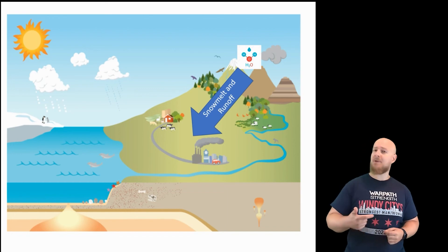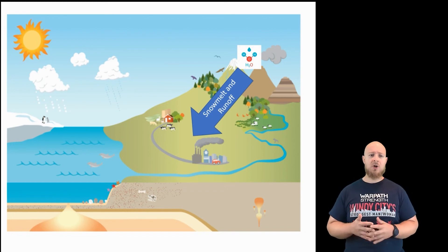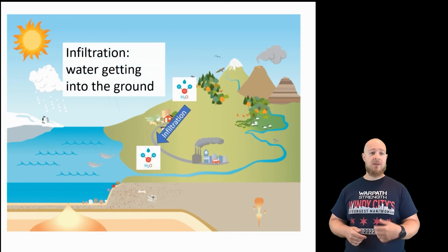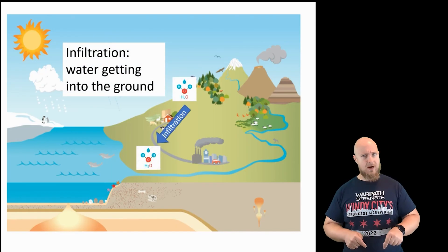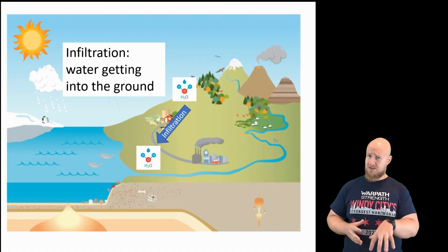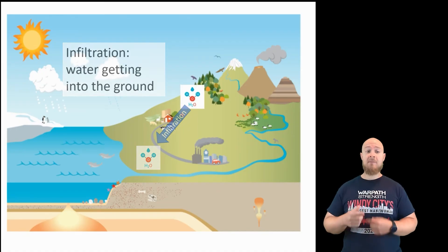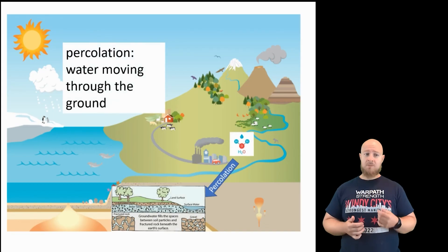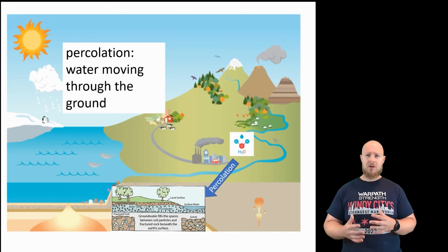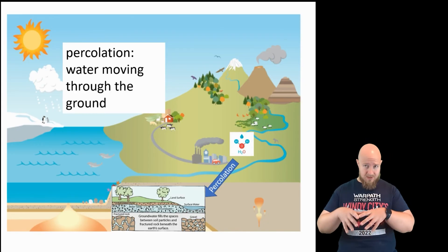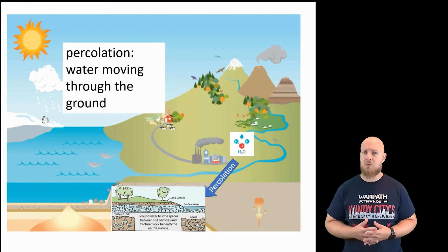While water running on top of the land is called runoff, when the water gets into the ground, we call that infiltration, the process by which water infiltrates into the ground. When the water actually gets into the ground, it doesn't stop moving. It percolates through the ground, and percolation is how water moves through the ground. This is important because the ground actually contains a large amount of water. We call it groundwater, or sometimes it's in a larger deposit called an aquifer.